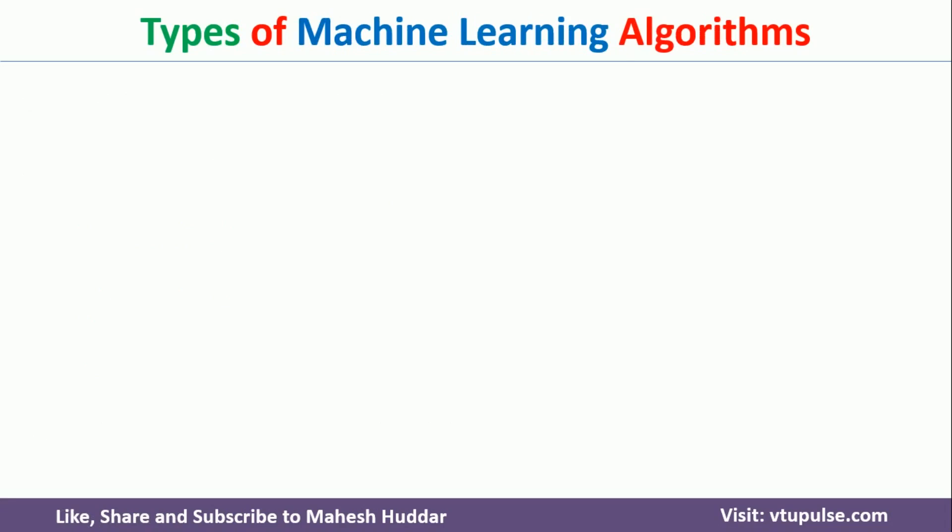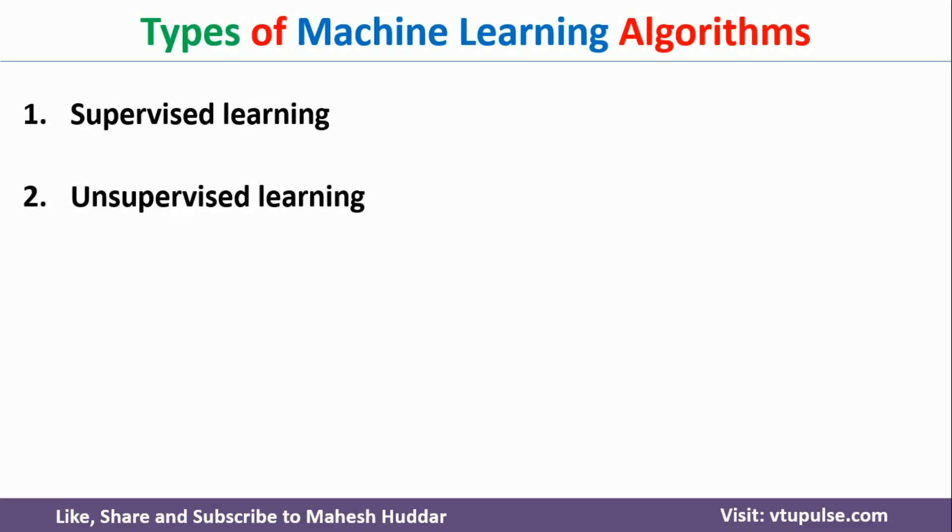Now we will see what are the different types of machine learning algorithms present. There are three types: the first one is supervised machine learning, the second is unsupervised machine learning, and the third is reinforcement machine learning. We will see each one in detail.